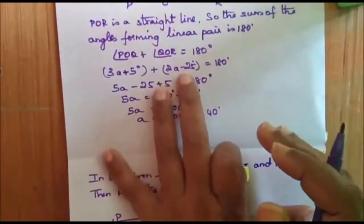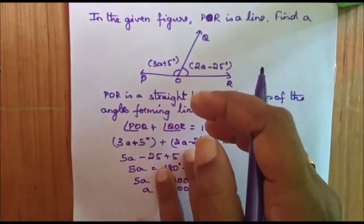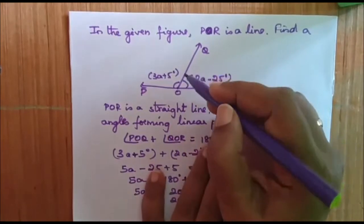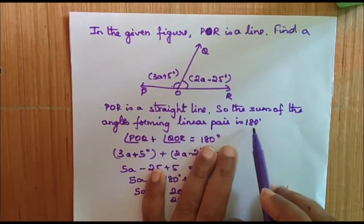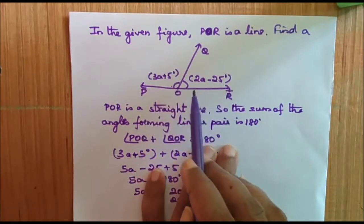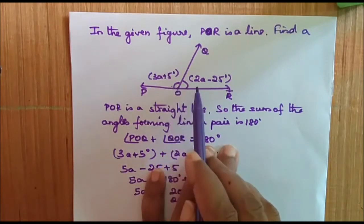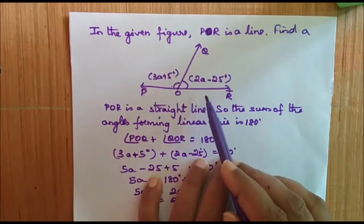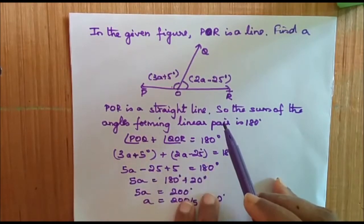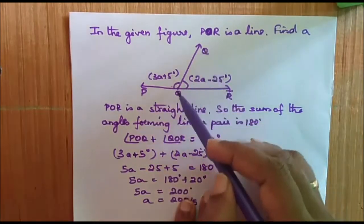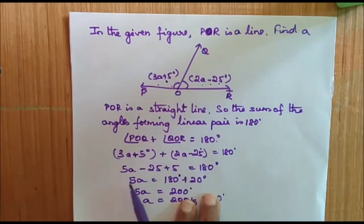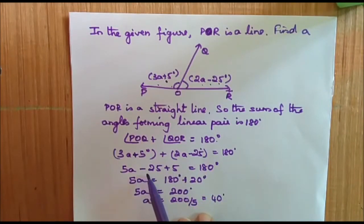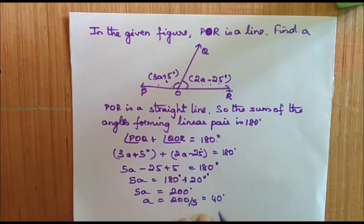In this given figure, POR is a straight line. Find A. Since POR is a straight line, the two angles form a linear pair and their sum is 180 degrees. So angle POQ plus angle QOR equals 180 degrees, that is 3A + 5 plus 2A − 25 equals 180 degrees. Solving, 5A − 20 = 180, so 5A = 200, giving A equals 40 degrees.